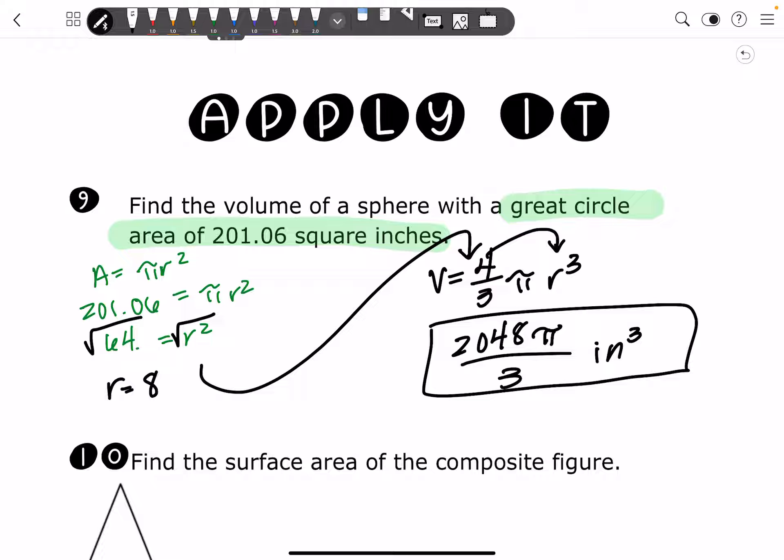We're not going to leave it like that, so we're going to go ahead and type it into our calculator and approximate. And we'll get 2144.66 inches cubed.